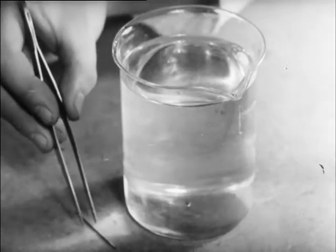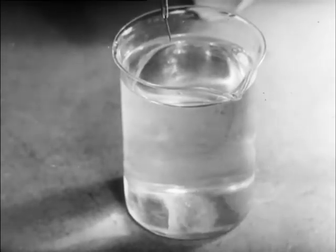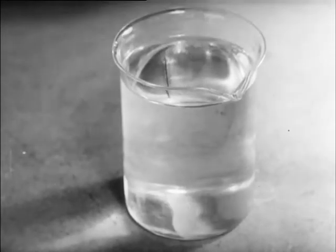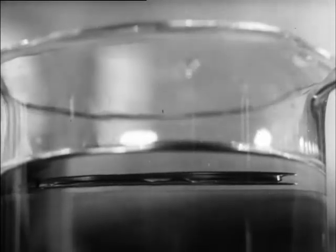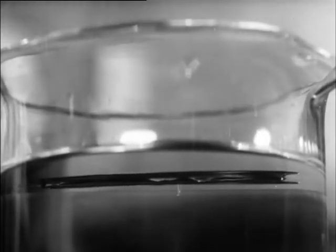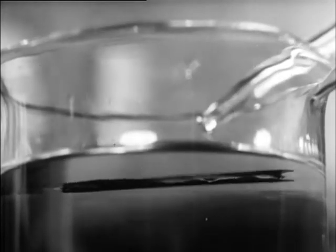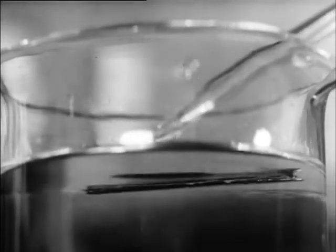The surface of a liquid acts as though it were covered by an invisible membrane. This can be shown simply by floating a needle in water. The surface tension is strong enough to counteract the gravitational force. Addition of alcohol decreases the surface tension. The needle sinks.